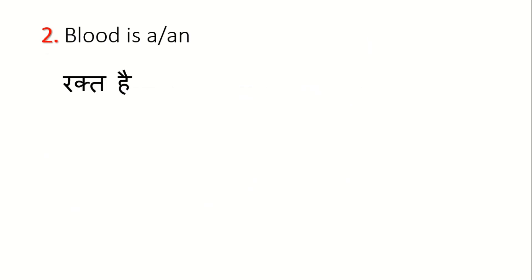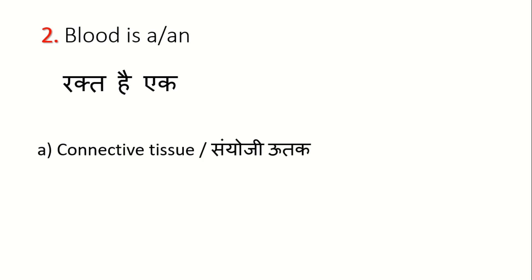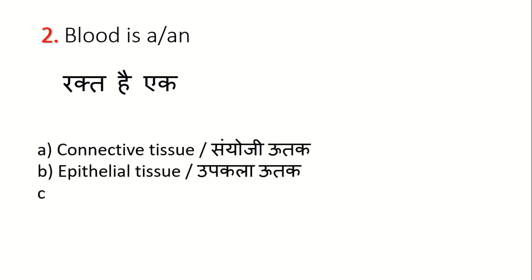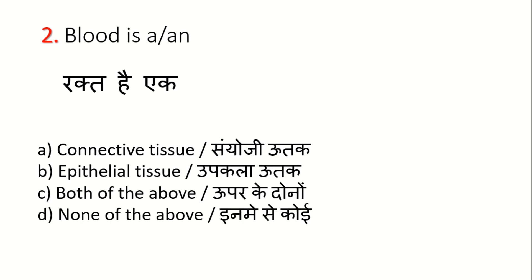Let's look at the next question. Blood is a — which type of tissue? Options are: A. Connective Tissue, B. Epithelial Tissue, C. Both of the above, D. None of the above.